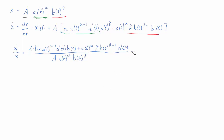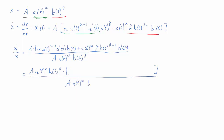We'll apply more or less the same trick as in the previous example: factor out what we can then cancel with the denominator. We want to factor out A·a(t)^α·b(t)^β, which matches the denominator exactly. For the green term, we factored out a(t)^α, so what remains is a(t)^(−1). Then a'(t) and b(t)^β, which was already factored out.